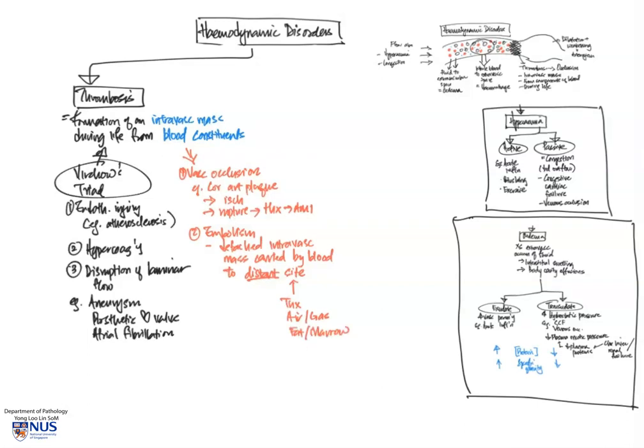For example, in long bone fractures where there are surgical procedures such as intramedullary nailing, some of the fatty material may get pushed into blood vessels and then eventually get lodged in smaller vessels downstream and give rise to ischemia at distant sites.